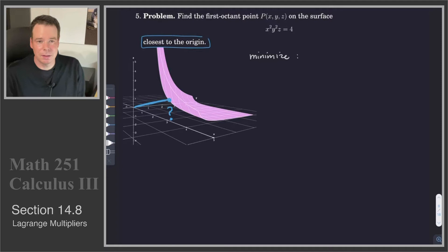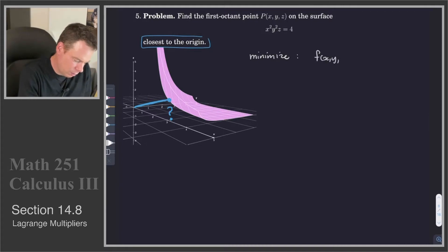But minimizing the distance that the point is from the origin would be the same as minimizing the square of its distance. So we'd like to work with the square of the distance function. So that is, we are going to minimize x squared plus y squared plus z squared. That's the function we're going to minimize. And this is the square of the distance.